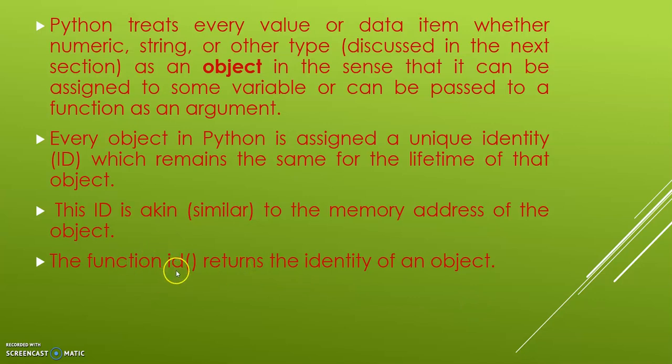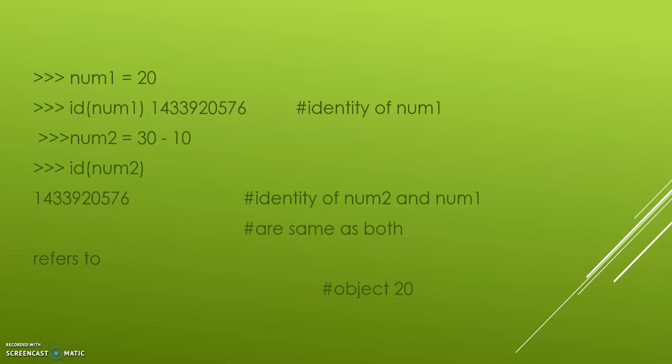The function id() will return and give us the identity of an object. With an example, you will understand this better. Now, look at this example.